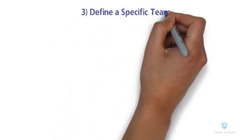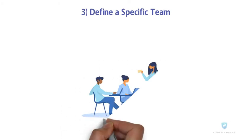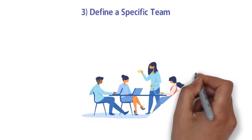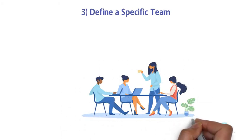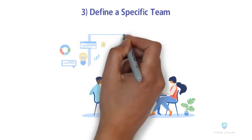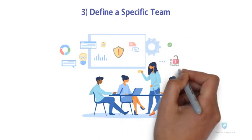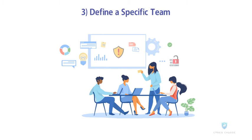Third, define a specific team: employ a well-defined team for network administration as well as data centers. Everyone in the team should be aware of their roles and responsibilities. An escalation of the threat ladder should be framed along with internal and external contacts to seek help from.